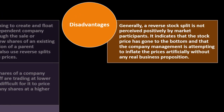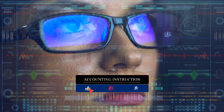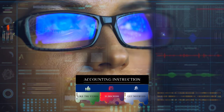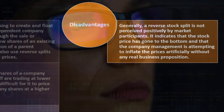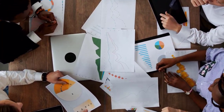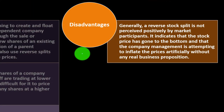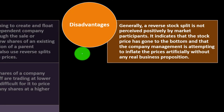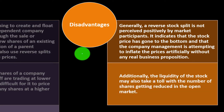Generally, a reverse stock split is not perceived positively by market participants. When people see a reverse split, it signals the company is going the opposite way of what investors want to see — a nice upward trend with a stock split due to high prices. Unless there's a strategic plan like a spinoff, a reverse split generally has a negative impact on perception because it signals a problem: the price is getting too low, possibly risking regulatory non-compliance or exchange delisting. It indicates that stock price has gone to the bottom and that management is attempting to inflate prices artificially without any real business proposition. Additionally, the liquidity of the stock may also suffer as the number of shares in the open market is reduced.